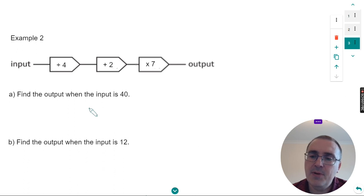Part A, find the output when the input is 40. Write down 40 at the start. First of all we need to divide it by four. So 40 divided by four is 10.